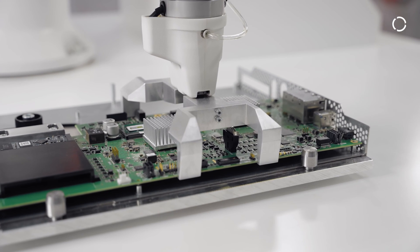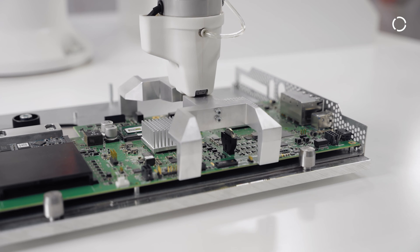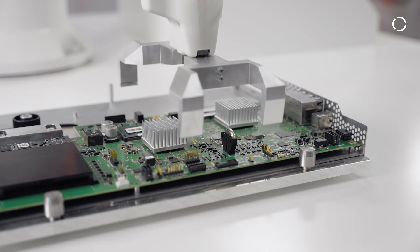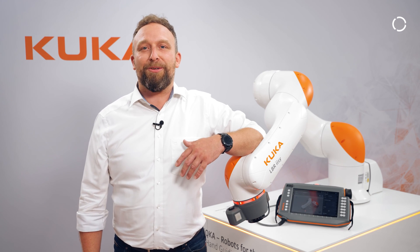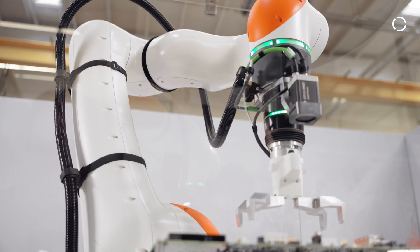The SMC gripper with integrated valves ensures a secure and reliable grip on the circuit board. The pneumatic hose for this is routed externally along the robot using available KUKA dress packages.